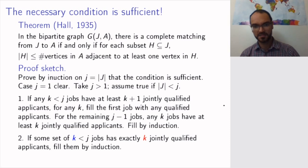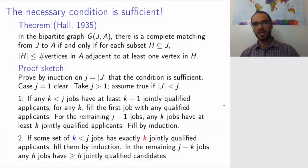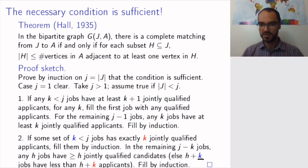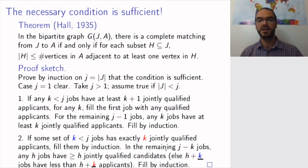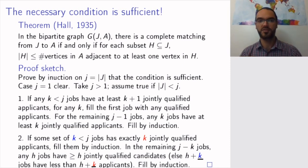If this doesn't happen — meaning you have some set of k jobs with exactly k jointly qualified applicants — then at least we can fill those k jobs by induction, since k is strictly less than j. For the remaining j minus k jobs, any number of those jobs will have as many jointly qualified applicants. Why? Because if you had h of those remaining jobs with fewer than h qualified applicants, then those h jobs together with the k first jobs would have strictly less than h plus k qualified applicants, contradicting our assumption that the k jobs had exactly k jointly qualified applicants. So this cannot happen, and we can apply the induction hypothesis to fill the remaining jobs as well. This completes the proof of Hall's theorem.